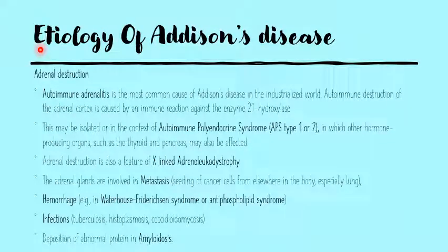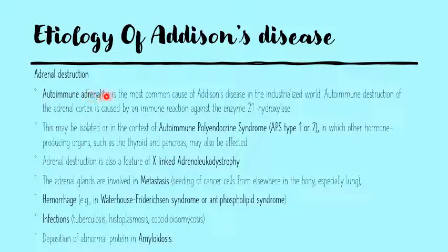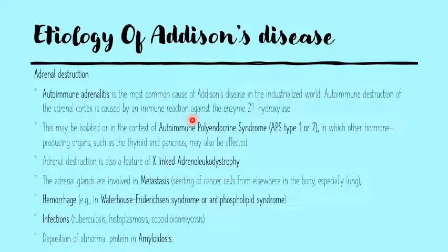Before moving on to the pathogenesis, let's mention the etiologies of Addison's disease. Typically it is because of the destruction of the adrenal parenchyma. The adrenal glands have quite a large reserve, so the majority of the parenchyma — around 70 to 80 percent of the tissue — would have to be destroyed before symptoms of any deficiency even manifest. The most common cause is autoimmune adrenalitis, where antibodies are produced against the enzyme 21-alpha-hydroxylase. This may be isolated or part of autoimmune polyendocrine syndrome, in which other hormone-producing organs like the thyroid and pancreas are also affected.